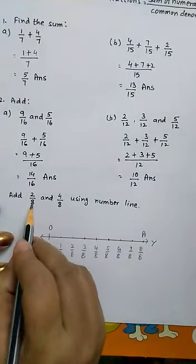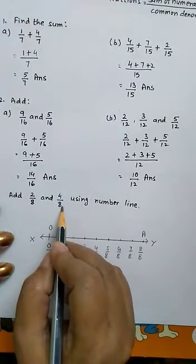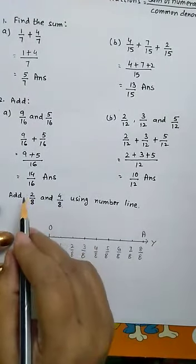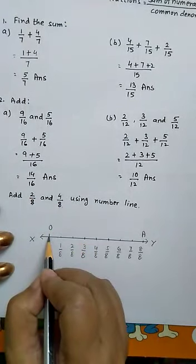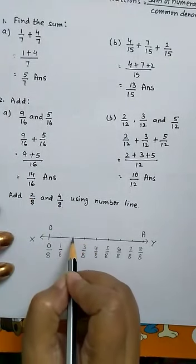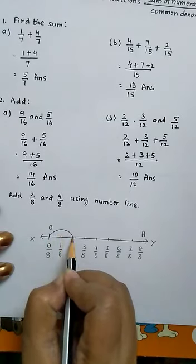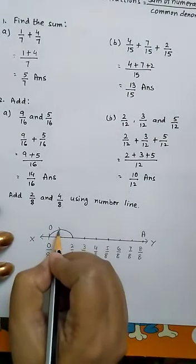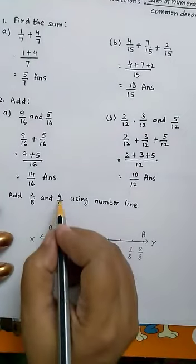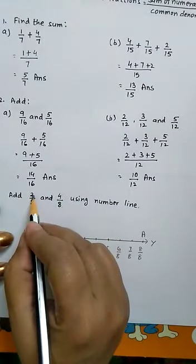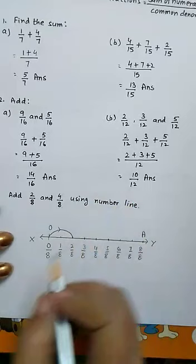Now we have to add 2 by 8 and 4 by 8. So we start from 0. First we will represent 2 by 8. 0. And where is 2 by 8? Here. So first we move from 0 to 2 by 8. Now we have to add 4 by 8 in it. So move 4 steps ahead.